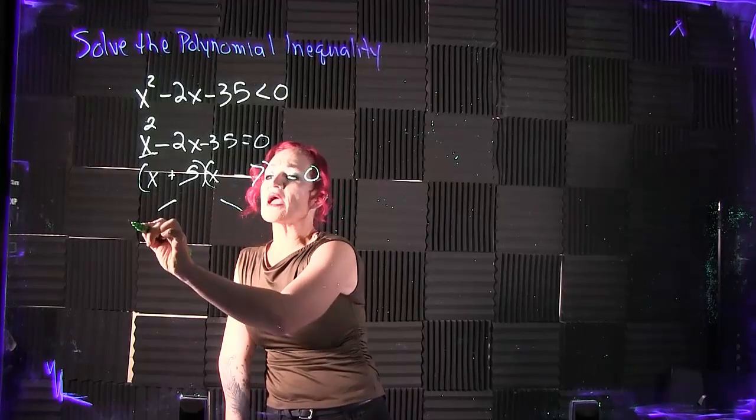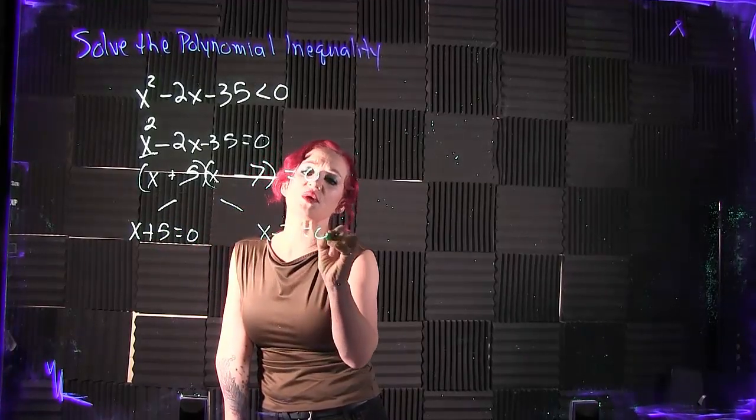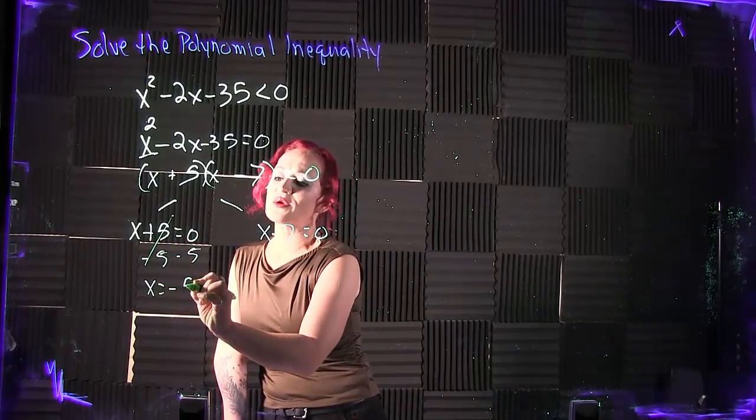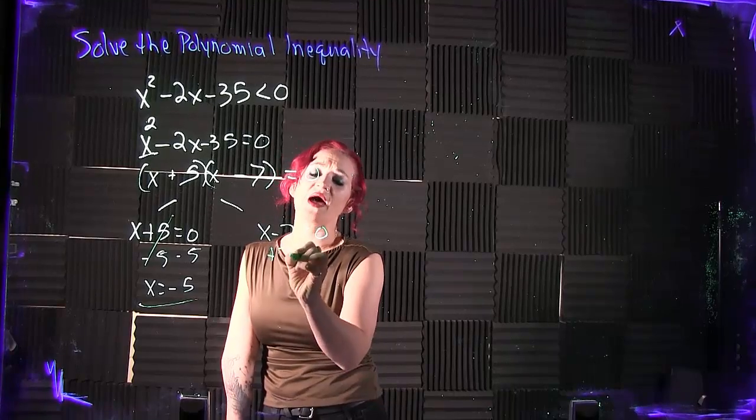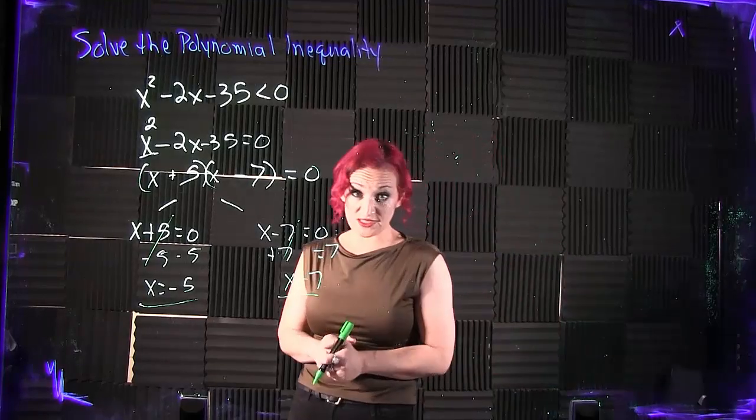Take your factors, split them up, set them each equal to 0, and solve. When we subtract 5 on each side, we get that x is negative 5. And then by adding the 7 to the other side, we get x is equal to 7.